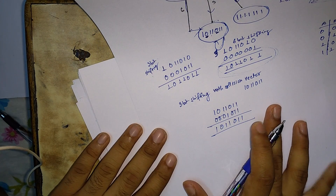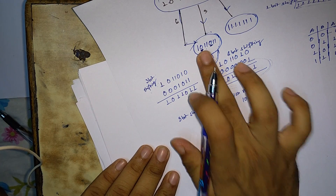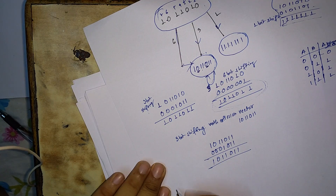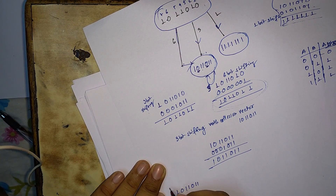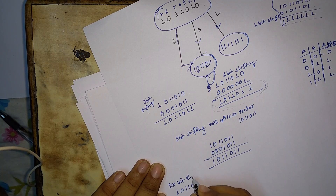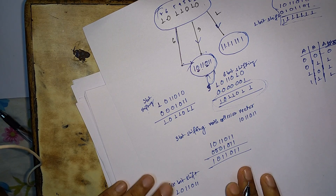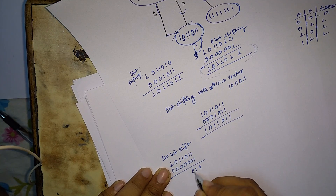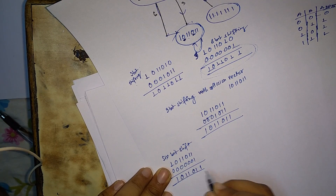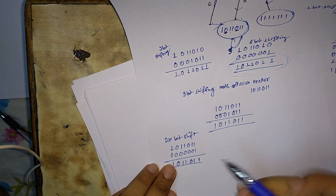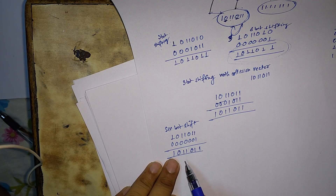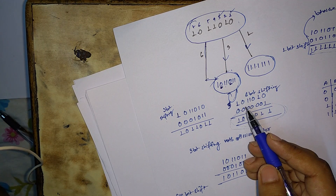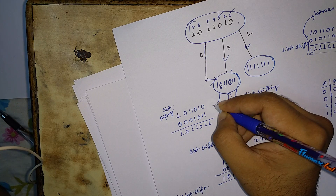Since there is also a zero in the sixth bit position, we must perform a six-bit shift on the present collision vector. After performing the six-bit shift, we again get the same bit string — so there is again a self-loop for the six-bit shift as well.